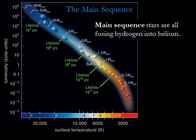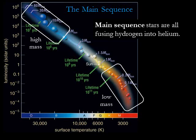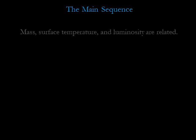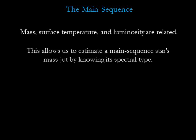All the stars on the main sequence have something in common: they are all fusing hydrogen into helium in their cores. The mass of the star determines both the surface temperature and luminosity. The hottest and most luminous main sequence stars have a high mass. The coolest and dimmest main sequence stars have a low mass. This orderly arrangement of stellar masses along the main sequence tells us that mass is the most important attribute of a hydrogen-fusing star. The fact that mass, surface temperature, and luminosity are all related means that we can estimate a main sequence star's mass just by knowing its spectral type.